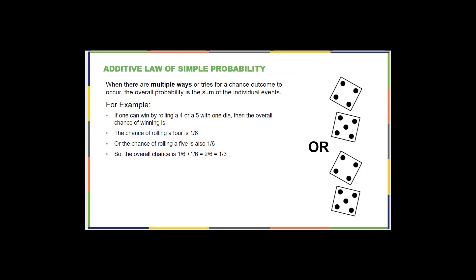Slightly more confusing, there are additive laws of simple probabilities. So when there's multiple ways or multiple options for something to happen, the overall probability that you're going to reach your outcome, how you get there is by adding individual events together. So we can win at our dice game if we roll a four, or we can win at our dice game if we roll a five. The chances of us rolling a four is one sixth, because the dice has six sides. And the chances of us rolling a five is one sixth, because a dice has six sides. So if we're curious, what are the odds that we're going to win our game if we roll either a four or a five? Well, we just add our two probabilities together.